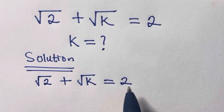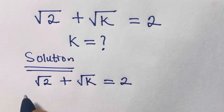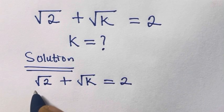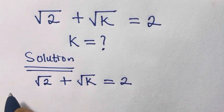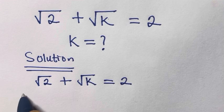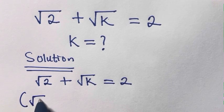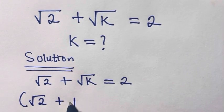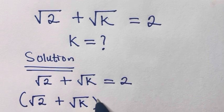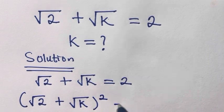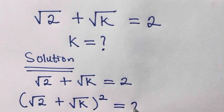The first step we have to take is to square both sides. If we square both sides we are going to have: square root of 2 plus square root of k, squared, equals 2 squared.